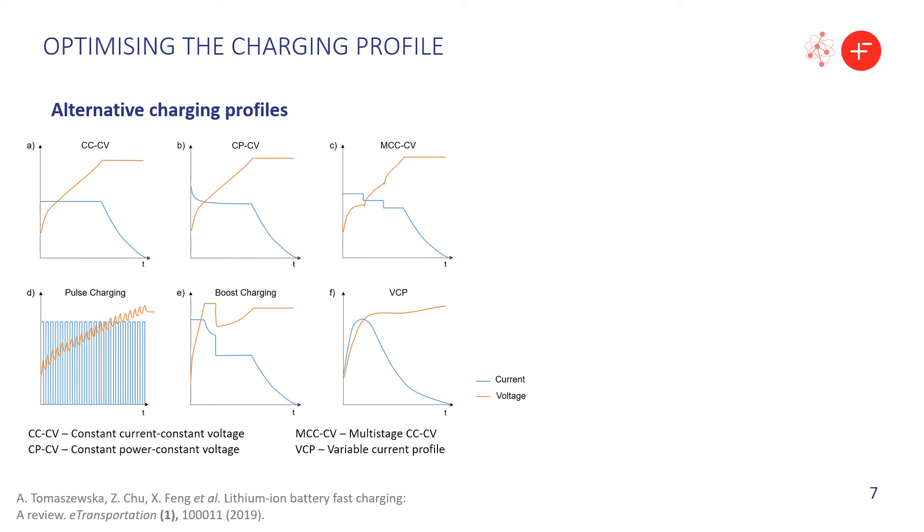Finally, some variable current profiles, such as the one shown here, take the cell resistance into account. So the charging process is started with low currents to avoid excessive heating, reaches the maximum at a low state of charge, and then gradually reduces to account for the mass transport limitations and increased risk of plating.